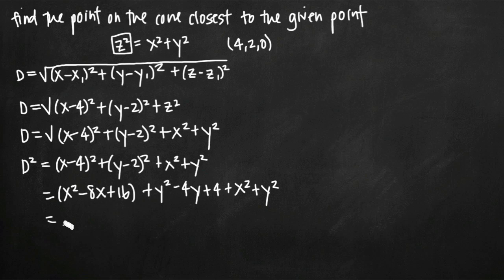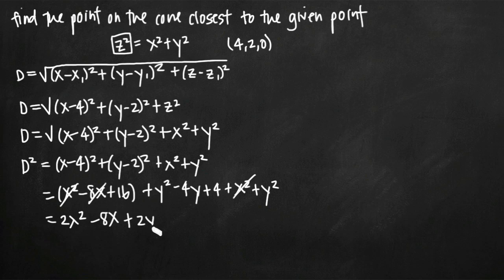When we simplify, we have x² + x² giving 2x², minus 8x; then y² + y² giving 2y², minus 4y; and constants 16 + 4 giving +20. So d² = 2x² − 8x + 2y² − 4y + 20. It doesn't really matter that we have d² here since squaring both sides hasn't changed the equation — this is still what we're trying to optimize.